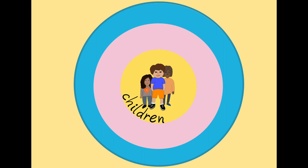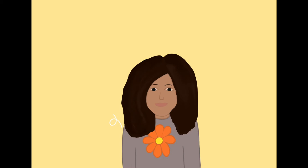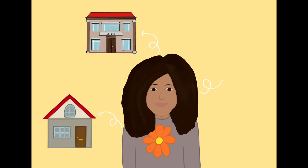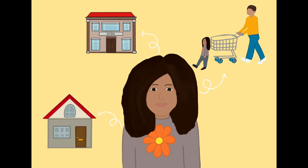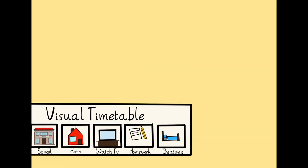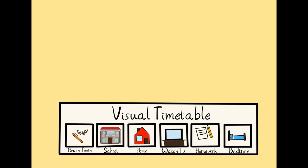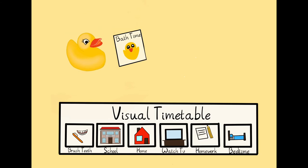We always want to keep children and young people at the centre of what we do. One way we can do this is by adapting the environment around your child. Your child's environment can be your home, school, nursery or anywhere they go. We can adapt the environment to support your child's communication by adding visual supports, objects and pictures.